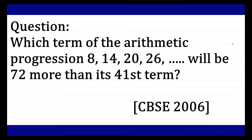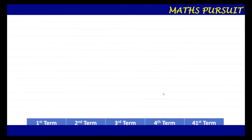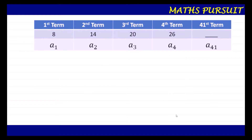Then we will add 72. Once we get the 41st term, we need to add 72 to it and find out which term that particular value belongs to. I have created a table with the given arithmetic progression: first term is 8, second term is 14, third term is 20, fourth term is 26, and the 41st term we do not know — we are going to find it out.